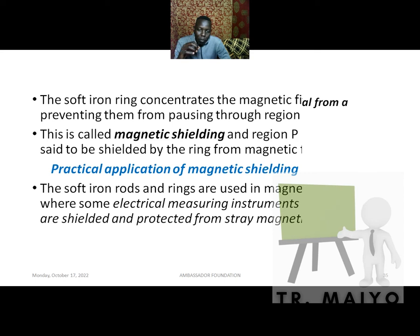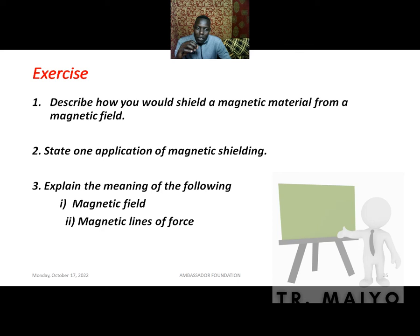Describe how you would shield a material from a magnetic field. State one application of magnetic shielding. Try to answer those questions. Also, explain the meaning of the following terms: magnetic field and magnetic field lines — we have already explained these, so try to see if you can answer.